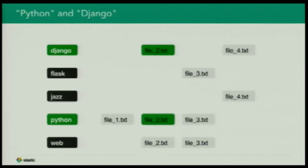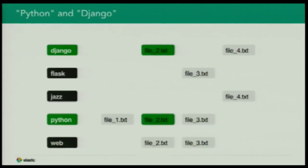So how does search work? It's simple. If we're looking for Python and Django, it's the same search you'd do in a book: you locate the line mentioning Django and the line mentioning Python. You can do that effectively because the list is sorted. You walk the list, and if you find a document present in both lists, that's your result. For an OR search instead of AND, you just take everything from both lists.